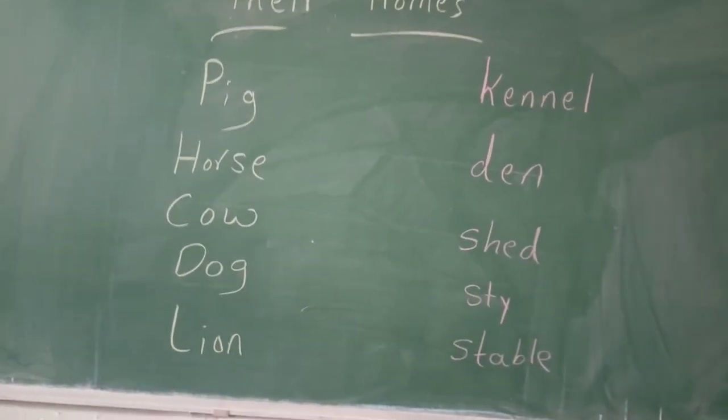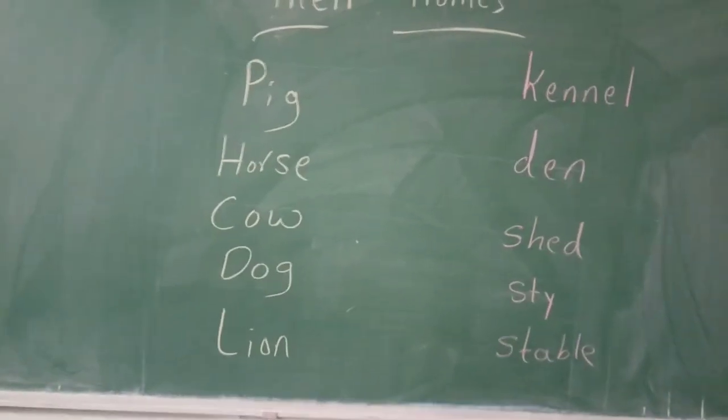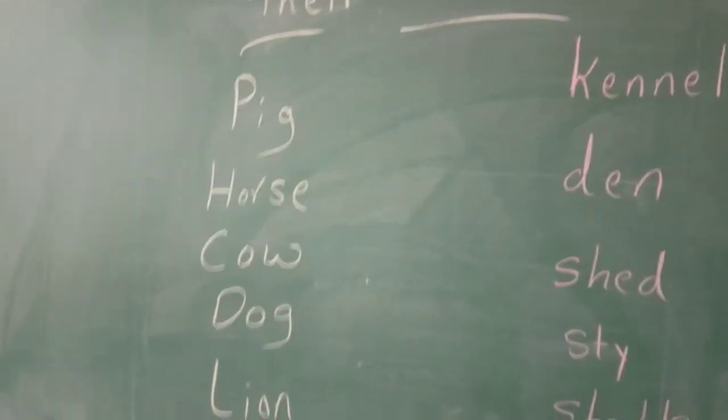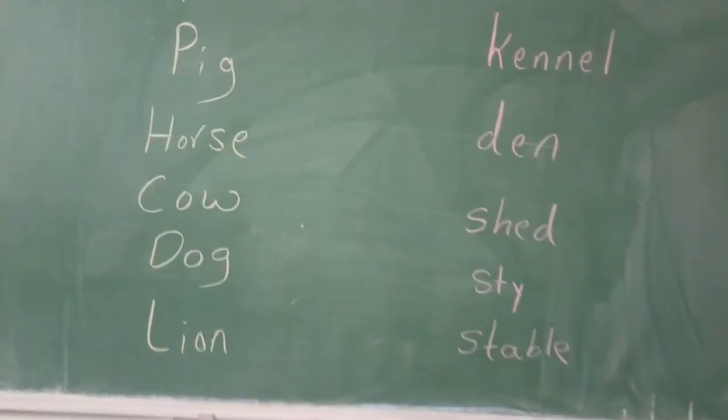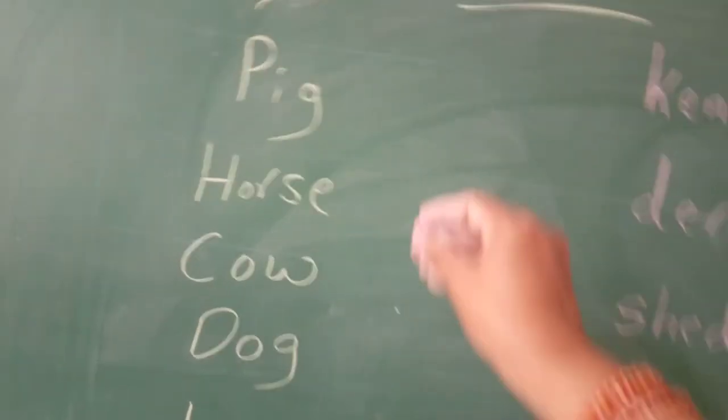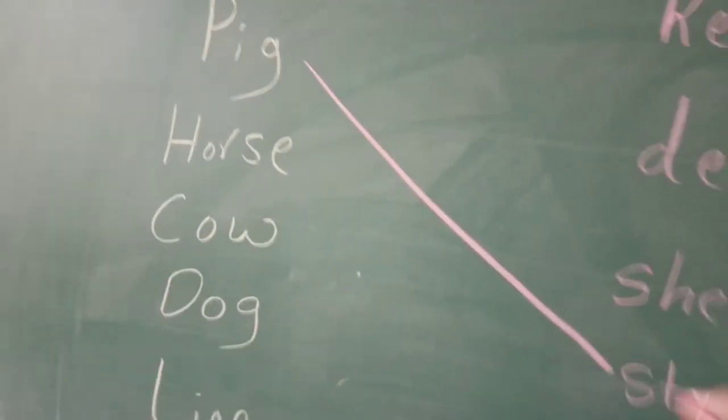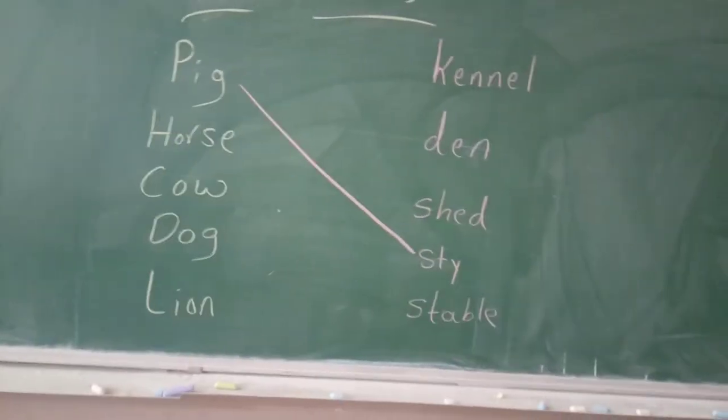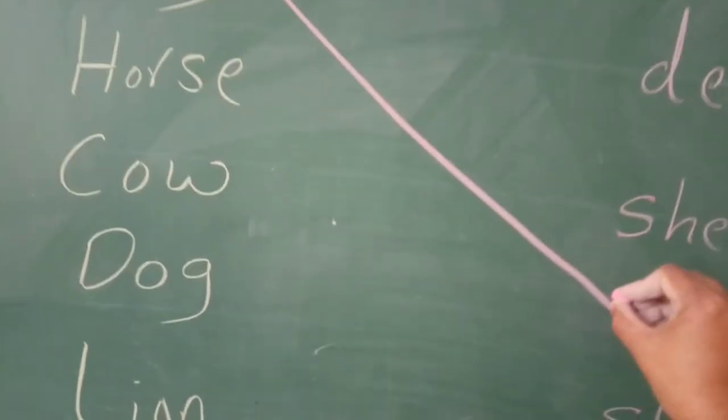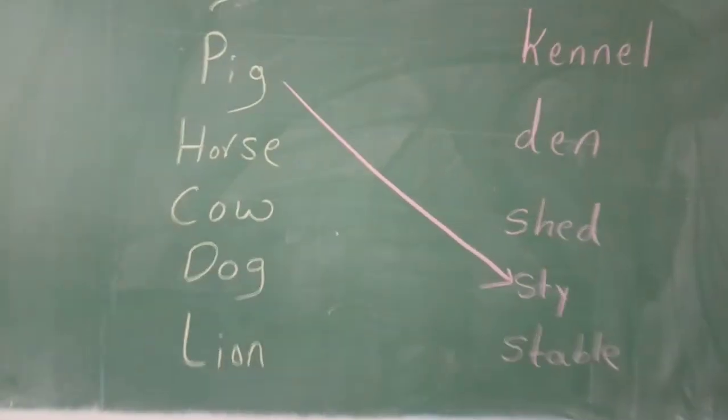One by one, we will match it now. See here children, first of all, Pig. Pig goes to Sty. Where is it staying? Sty. What is the home name? Sty. Just you put the arrow mark here.